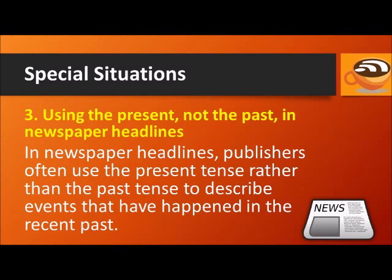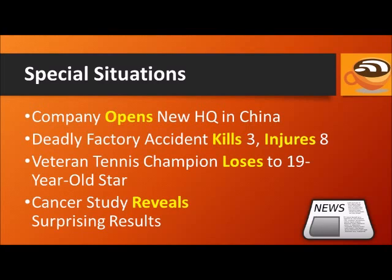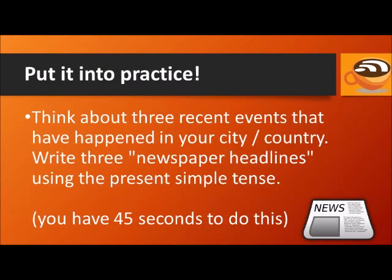In newspaper headlines, publishers often use the present tense rather than the past tense to describe events that have happened in the recent past. This makes them seem more immediate, as if the reader is in the middle of the action. For example: Company opens new HQ in China. Deadly factory accident kills three, injures eight. Veteran tennis champion loses to 19-year-old star. Cancer study reveals surprising results. Now put it into practice — write three newspaper headlines using the present simple tense about recent events in your city or country.